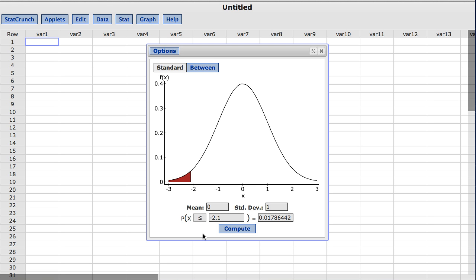StatCrunch calculators can also be used in reverse to find a reference value given a probability to be above or below it. This is often done when finding the critical value for a hypothesis test or a multiplier in a confidence interval. In this case, for the standard normal distribution, to find the value where there is a probability of 0.05 of being above it,